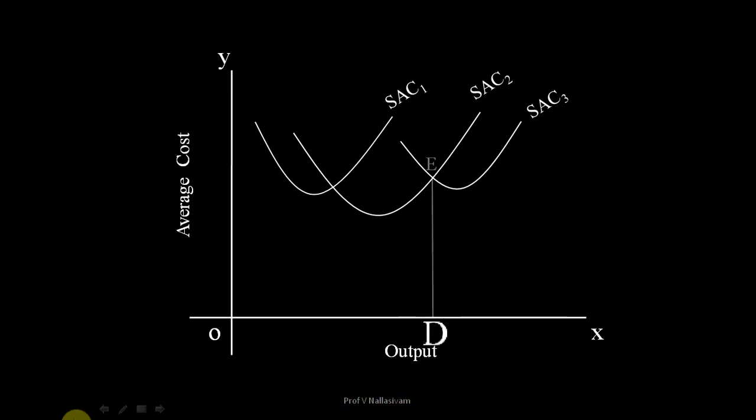Beyond OD level of output, the firm prefers to have large size plant because the average cost is less.